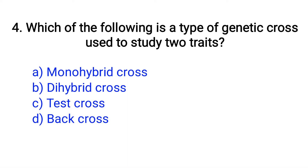Question number 4. Which of the following is a type of genetic cross used to study traits? Option A: Monohybrid cross, B: Dihybrid cross, C: Test cross, D: Back cross. The right answer is Option B: Dihybrid cross.